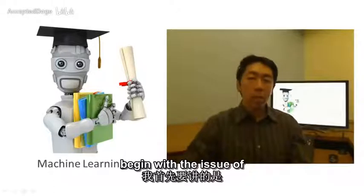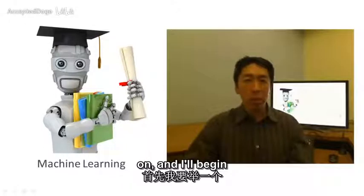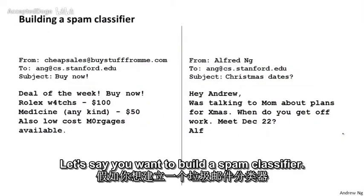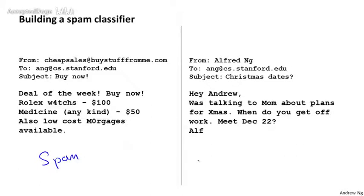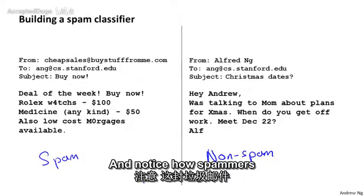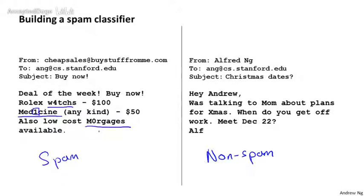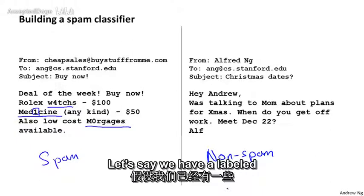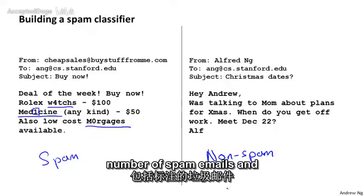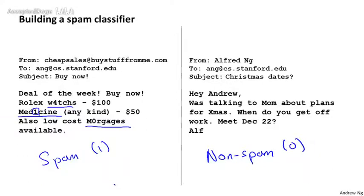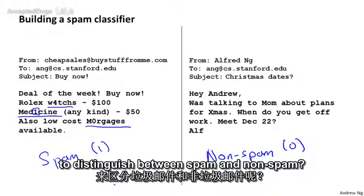I'd like to begin with the issue of prioritizing how to spend your time on what to work on, and I'll begin with an example on spam classification. Let's say you want to build a spam classifier. Here are a couple examples of obvious spam and non-spam email, with the one on the left trying to sell things. Notice how spam is sometimes deliberately misspelled words like medicine and mortgages. We have a labeled training set of spam emails and non-spam emails denoted with labels y equals one or zero.